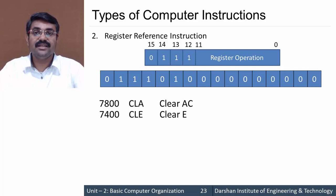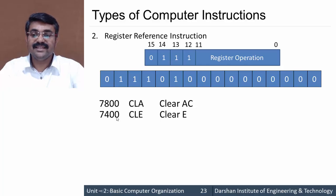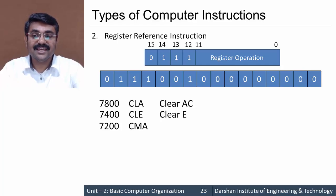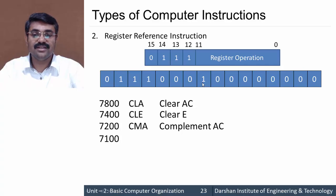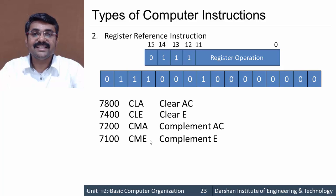Changing the active bit, the code becomes 7400, designated as CLE — clear E. E is a flip-flop that holds an extra bit generated during certain micro-operations. To clear E, we use code 7400. Next, code 7200 is CMA — complement AC, meaning every bit in the accumulator is complemented: 0 becomes 1 and 1 becomes 0.